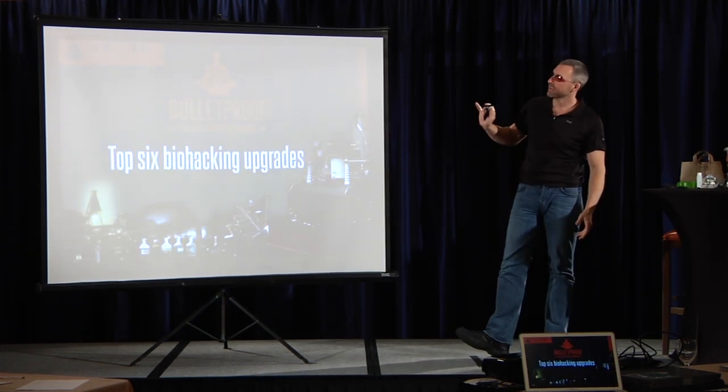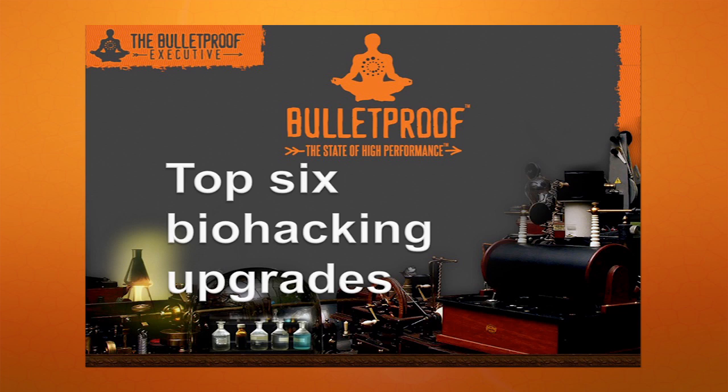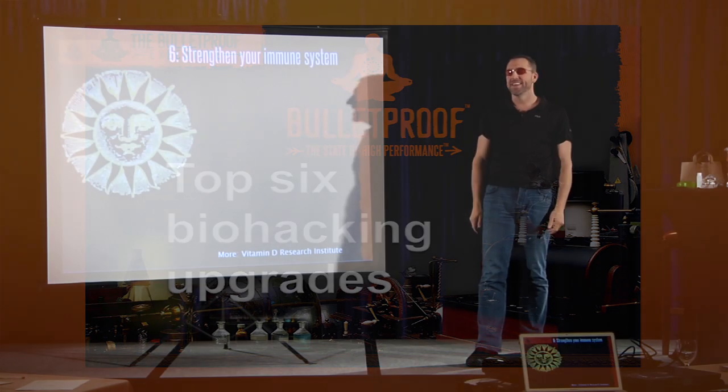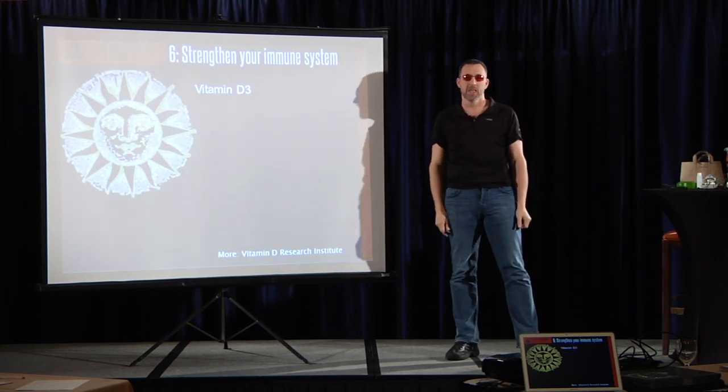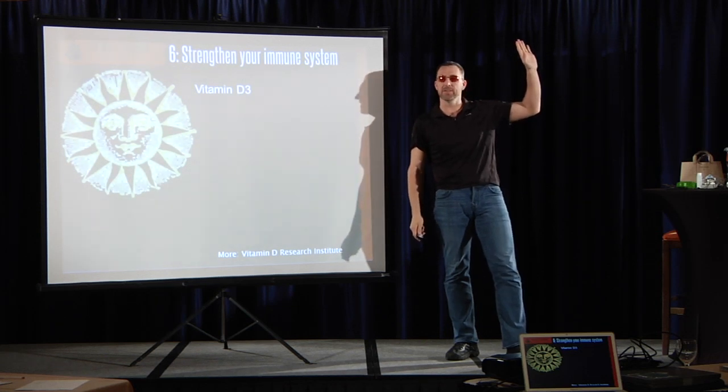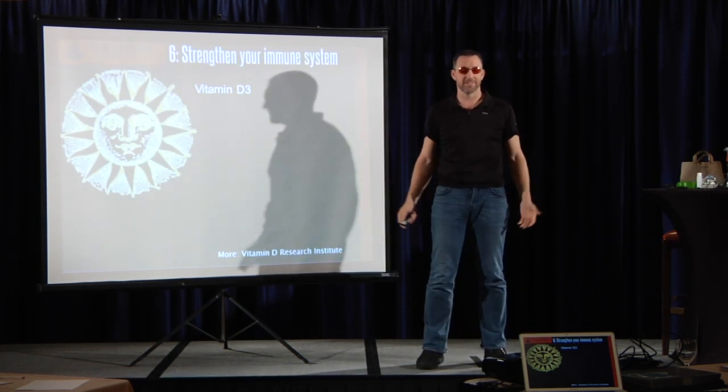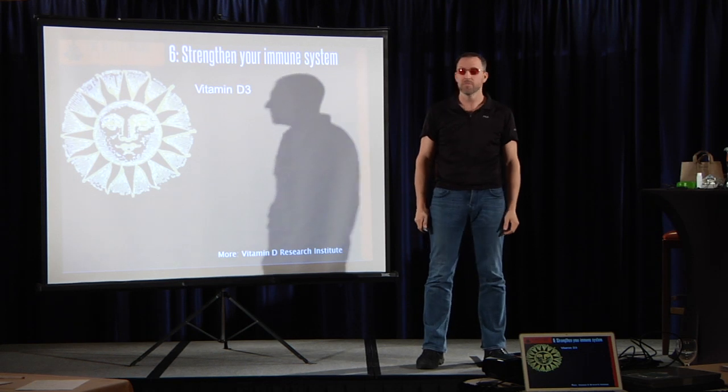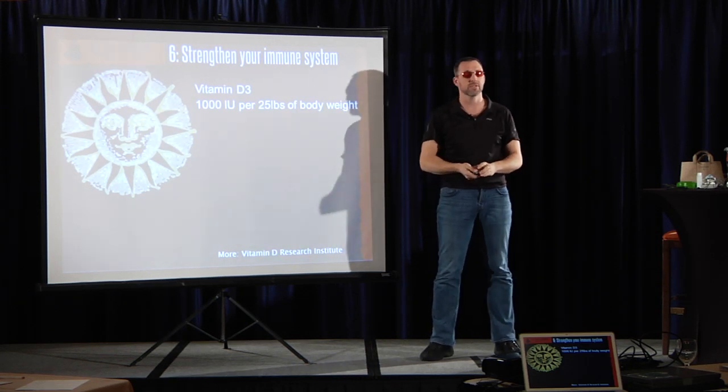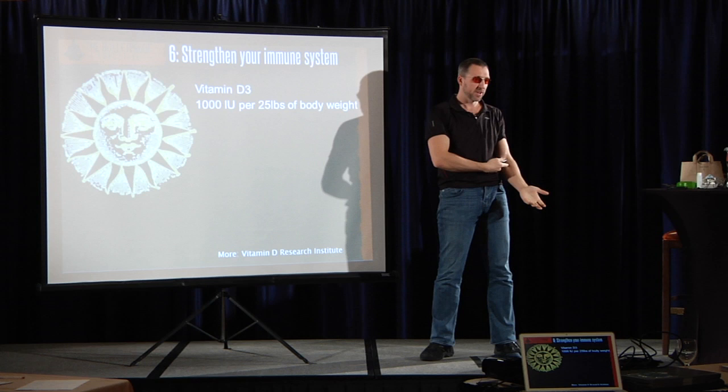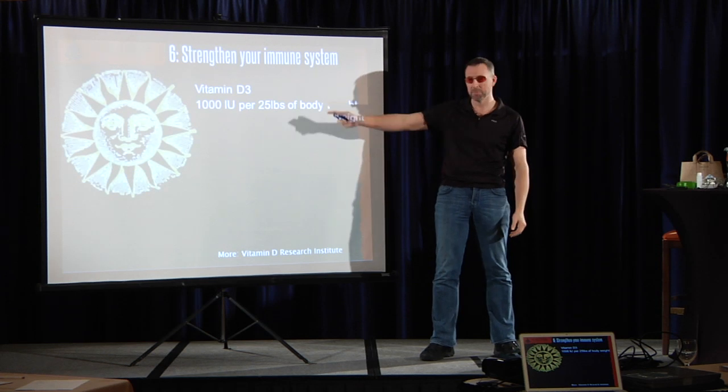Top six biohacking upgrades. Number six: Strengthen your immune system with the sunshine vitamin, vitamin D3. How many of you take vitamin D3? The rest of you, what the hell is wrong with you? It's like $3 a month. A thousand IUs per 25 pounds of body weight. This will bump your numbers up pretty substantially.